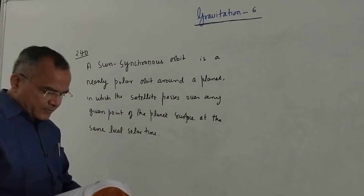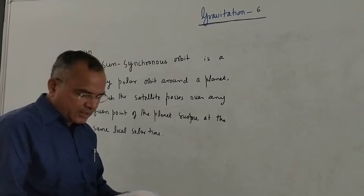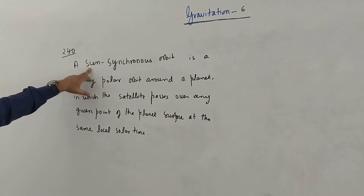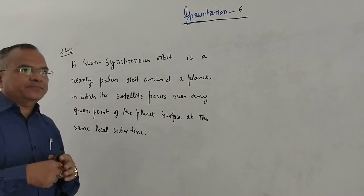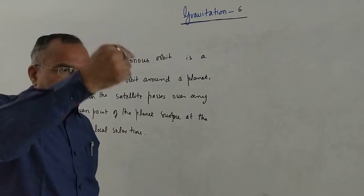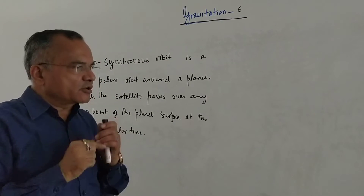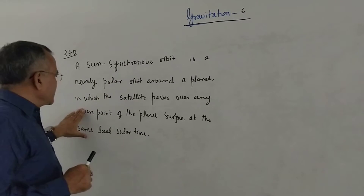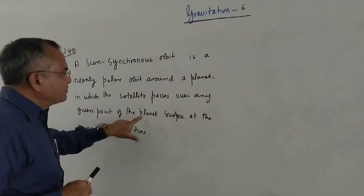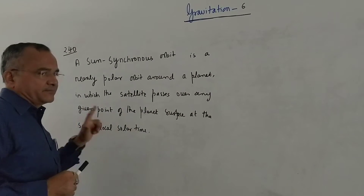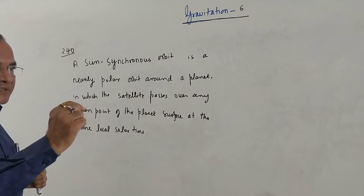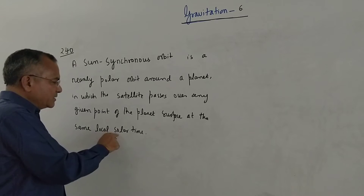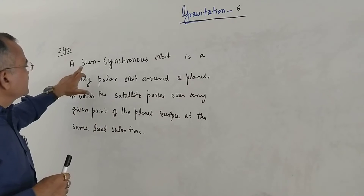For problem number 240: polar satellites are sun-synchronous satellites. A sun-synchronous satellite is a nearly polar satellite — its orbit passes over the north pole and south pole. The reason it is called sun-synchronous is that it passes over any given point on the planet surface at the same local solar time repeatedly.